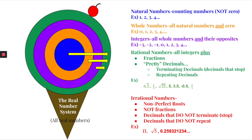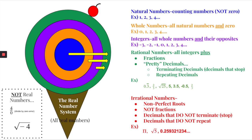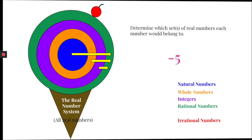Just to note: there are numbers considered not real — imaginary numbers — such as four divided by zero. If you type that into your calculator, it'll give you a divide-by-zero error. Or the square root of negative four — that's also not a real number. Lucky for you, we don't have to deal with that this year, but just know those are out there.